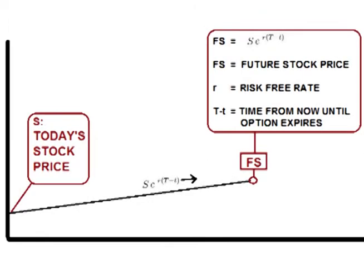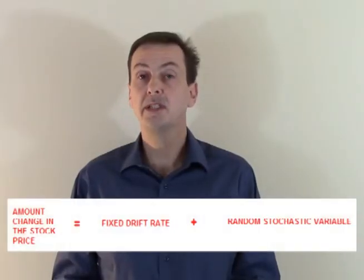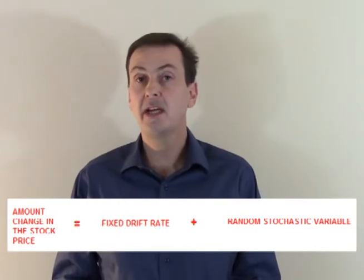Now let's apply Brownian motion to the movement of an asset price. Again, there are two driving forces of price: a constant drift rate and a random stochastic variable. The randomness comes from the volatility, and the no riskless arbitrage argument shows us that with this randomness removed — in other words, with the risk or volatility removed — the drift rate must be the risk-free rate, or one could engage in riskless arbitrage. Therefore, the two driving forces of price are the risk-free rate and the effect that constant random volatility has on that rate.